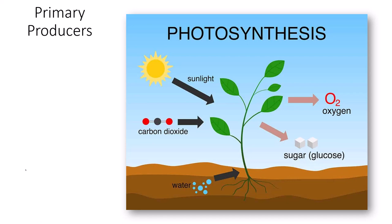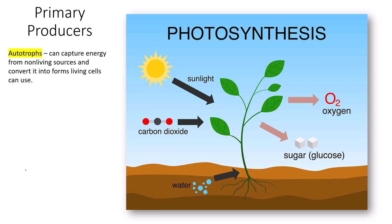The first thing we need to do when talking about energy production is talk about what a primary producer is. A primary producer is also called an autotroph, and autotrophs are self-feeding. So autotrophic is going to roughly translate to self-feeding. These are organisms that can capture energy from non-living sources and convert it into forms that living cells can use.